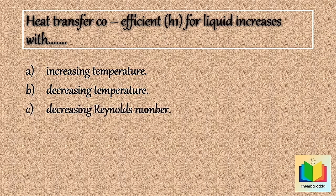Option C: Decreasing Reynolds number. Option D: None of these.